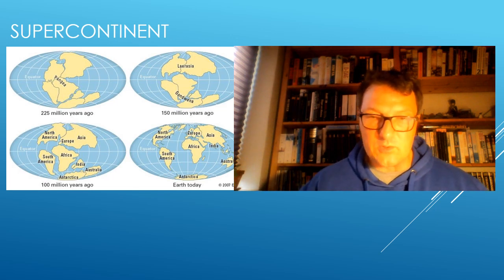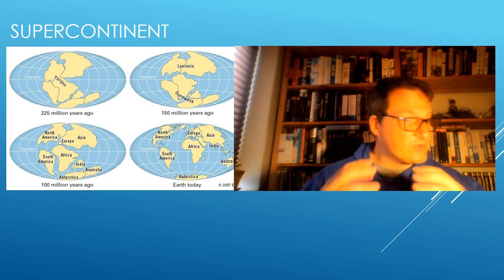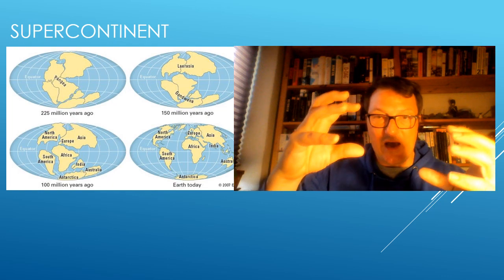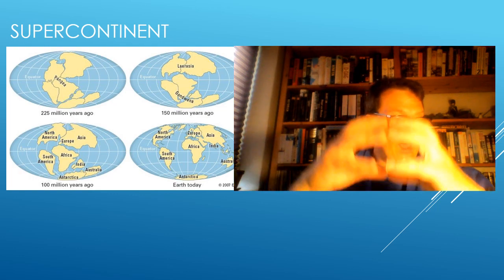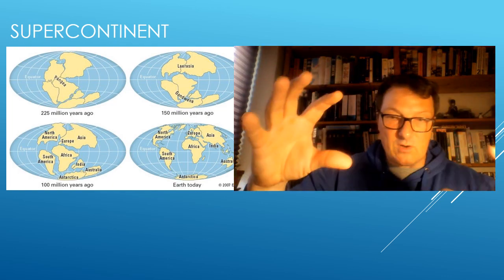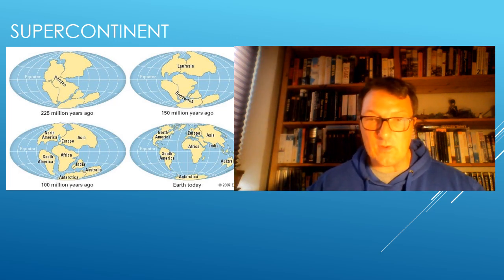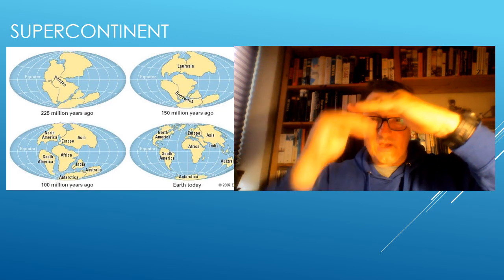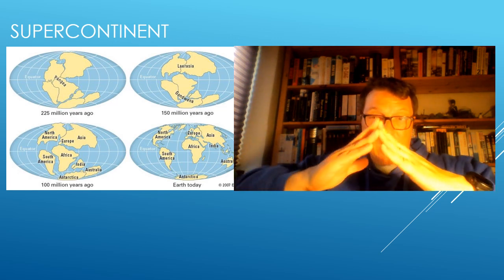Our current theory, supported by geology and fossil evidence, is that we used to have one huge supercontinent called Pangea. Pangea then split into two continents, and over time split further. This changes the shapes of our oceans — in the beginning there was one supercontinent and everything else was ocean, but now we have five different main oceans. This is not just something that happened in the past. The Indian subcontinent keeps pushing into the Asian subcontinent, thereby creating the Himalayas, which are actually getting pushed higher and higher every year.